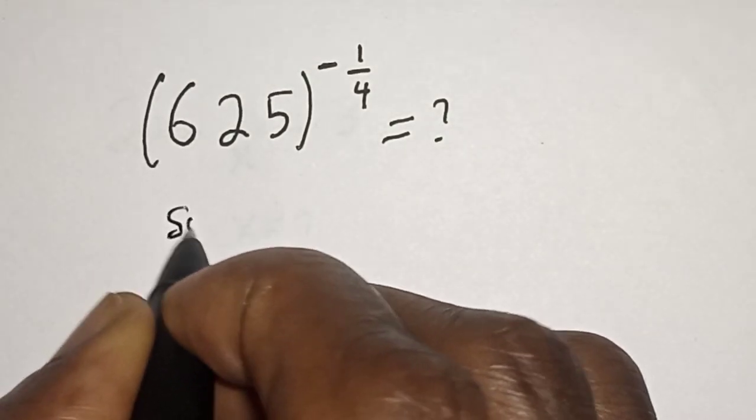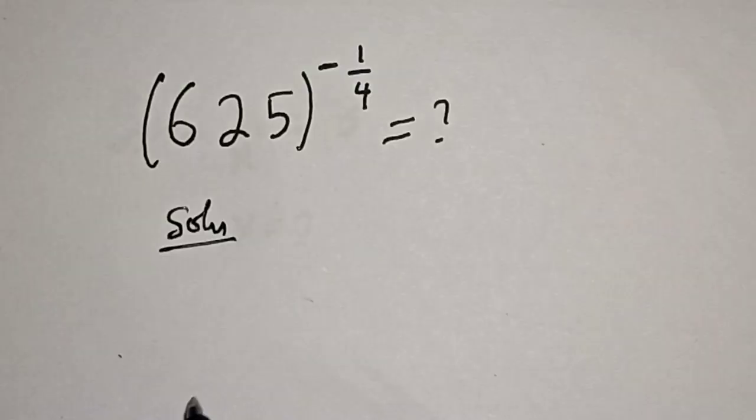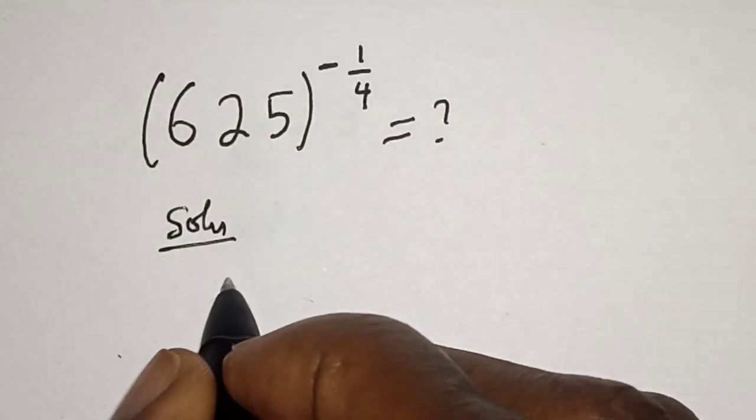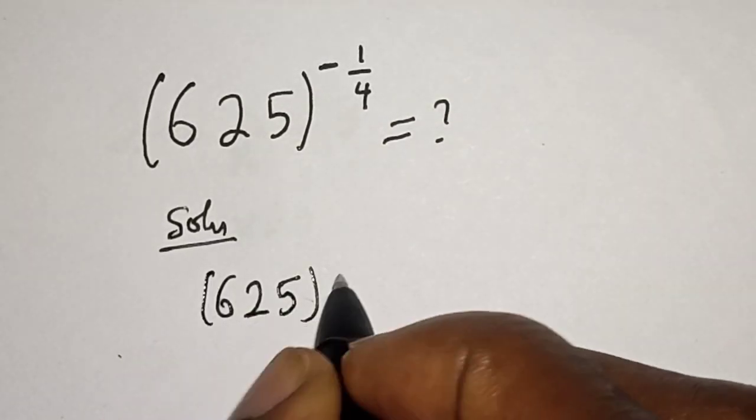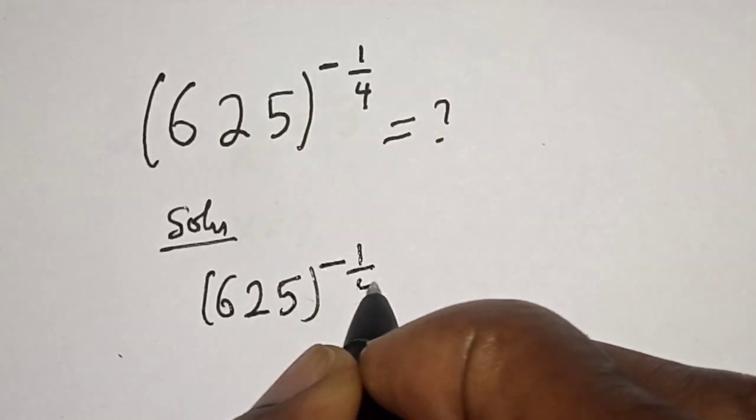Solution. We have 625 to the power of minus 1 over 4.